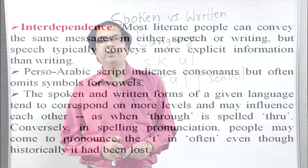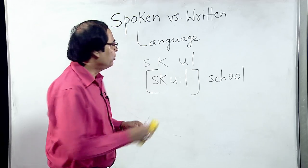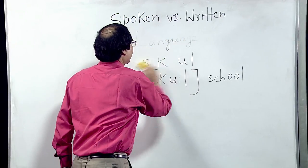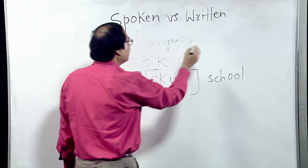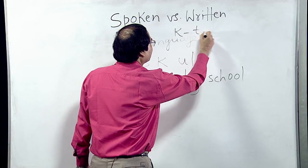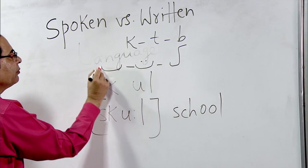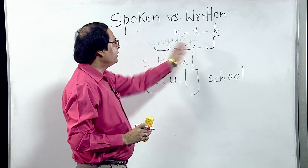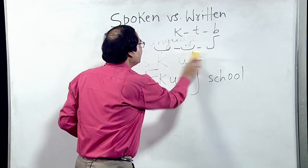The next difference is Interdependence. Most literate people can convey the same messages in either speech or writing, but speech typically conveys more explicit information. The Perso-Arabic script indicates consonants but often omits symbols for vowels. In Arabic and Urdu, you write only consonants — say ka, ta, ba — and insert vowels between them to produce many words, but the vowel symbols are not written.